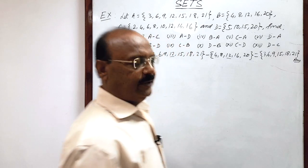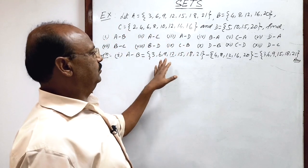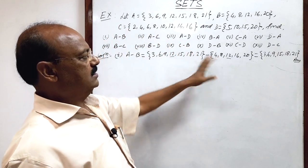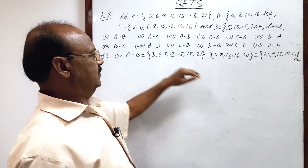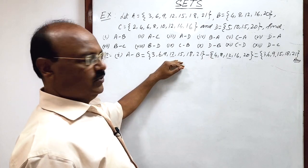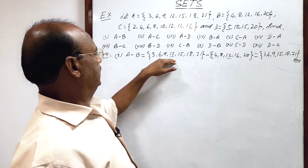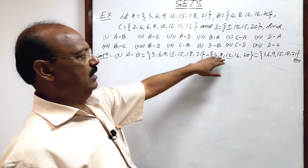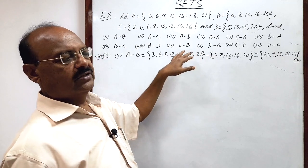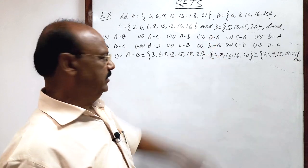Very easy. We just have to remove the common elements in both sets from set A — we delete those elements in set A which are available in set B. Those will be subtracted, that will be removed.